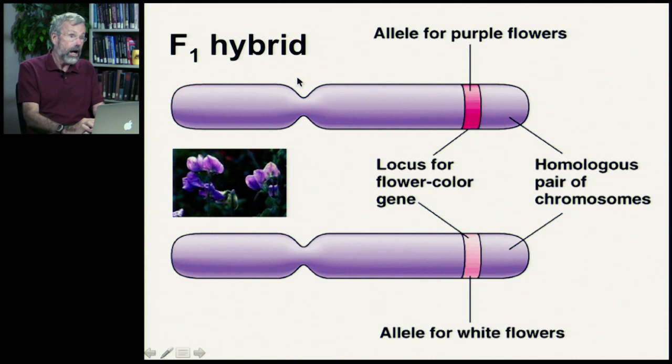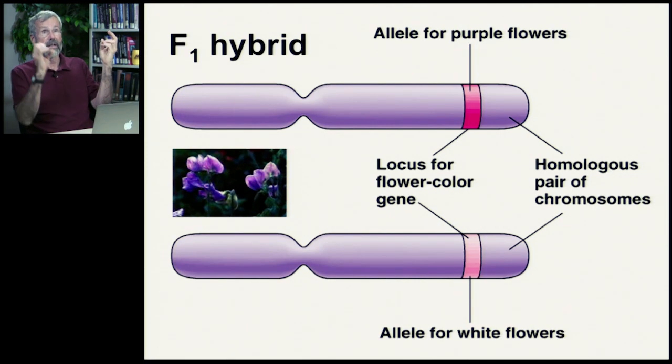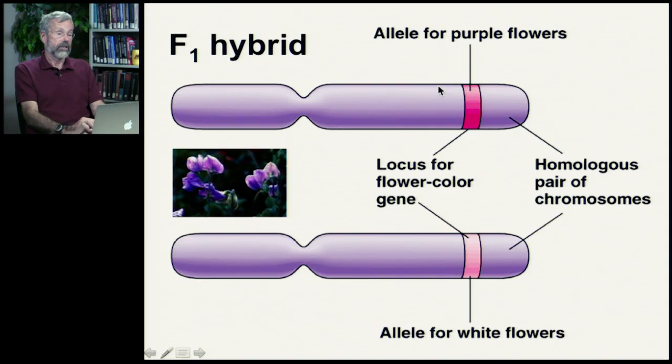And our hybrid, the F1 will have a purple parent and a white parent. So, on the chromosome it inherited from its purple parent, it has the purple allele. On the chromosome it inherited from its white parent, it has the white allele. So, these are our homologous pairs. You've got alternative alleles for flower color in the F1.